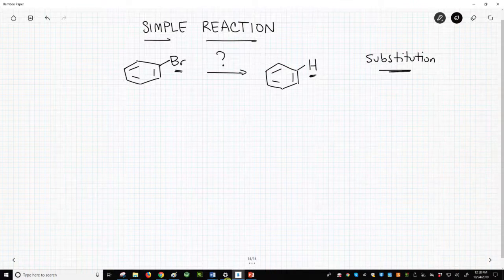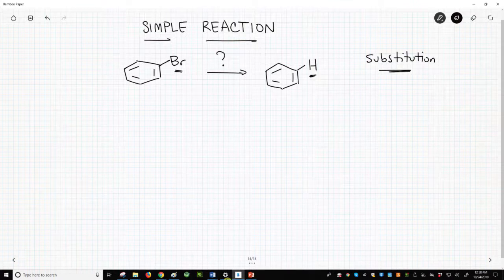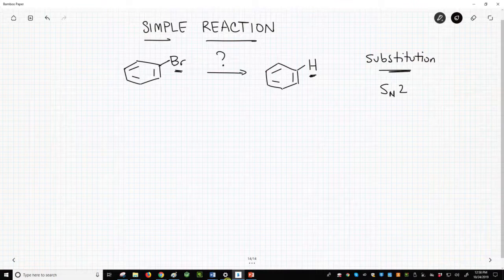If you're following these videos in a typical order, you have likely seen a few different types of substitutions. We've seen the SN2 reaction, which involves a strong nucleophile displacing a leaving group on an sp3 hybridized carbon. The halide isn't attached to an sp3 carbon, so this won't be an SN2.